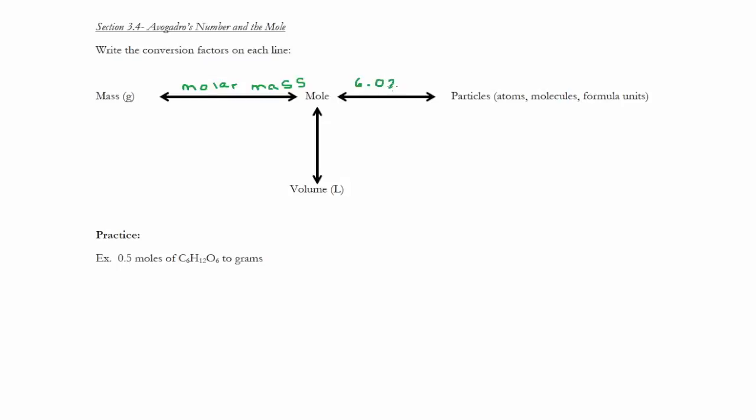So, 6.02 times 10 to the 23rd. And then, if I'm wanting to go from moles to volume, I can do that. There are 22.4 liters for every one mole, but I must be at STP, which is standard temperature and pressure.